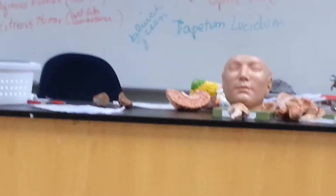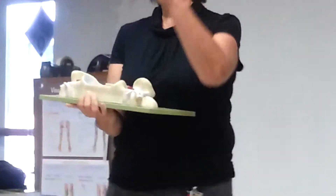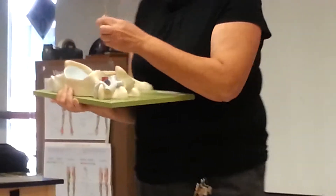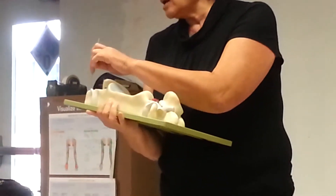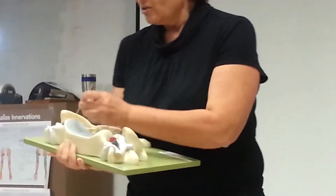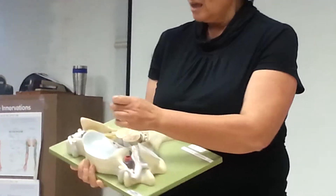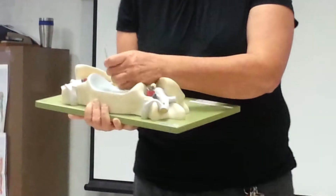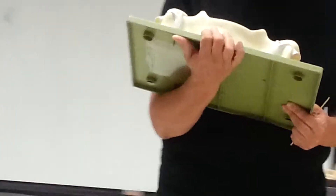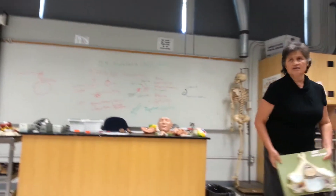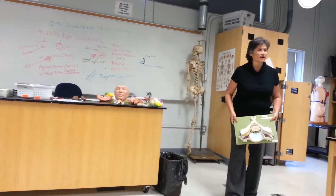The other thing that students have trouble finding is the rami communicants — it's depicted better in the other model without the bone — and the sympathetic trunk. That's the anterior ramus of a spinal nerve. That's the posterior ramus. There's the dorsal root ganglia. There's the dorsal root, and there's the ventral root.